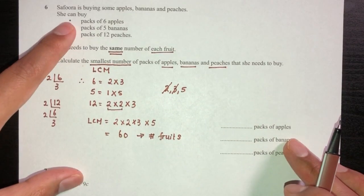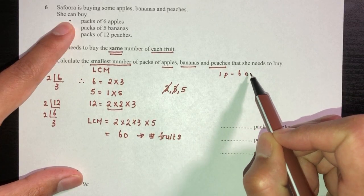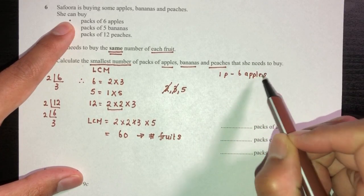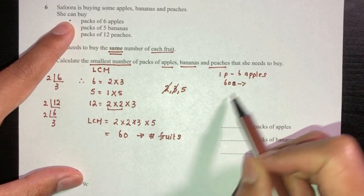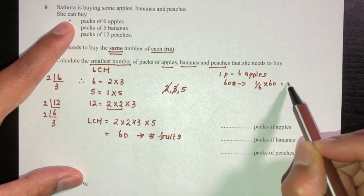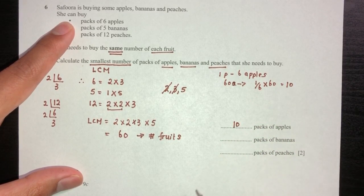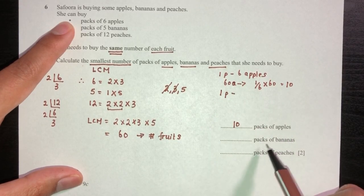We know that one pack has six apples. Now sixty apples - so sixty apples will be how many packs? So one divided by six times sixty, that will be ten packs of apples. So the first one is ten.